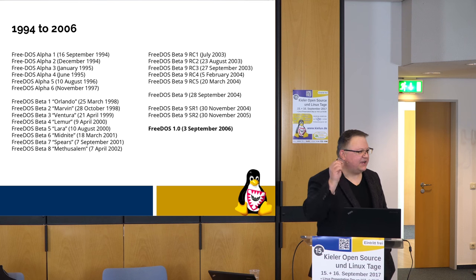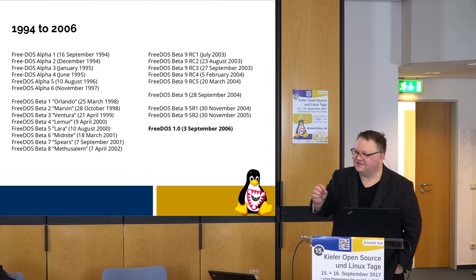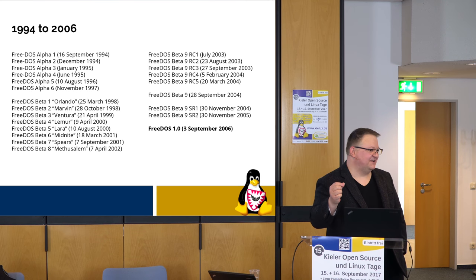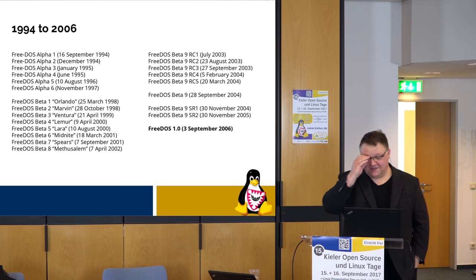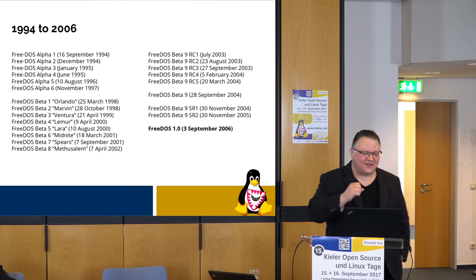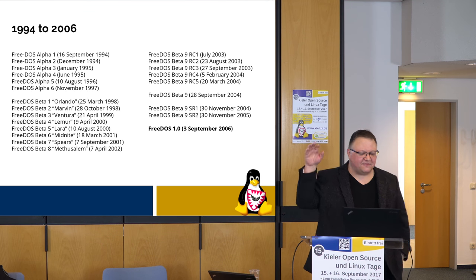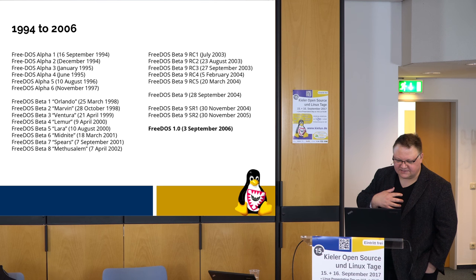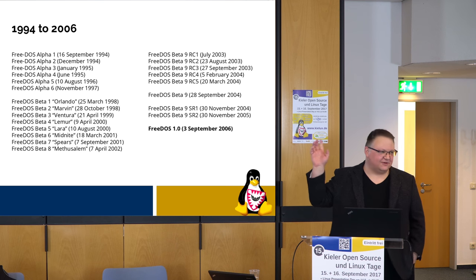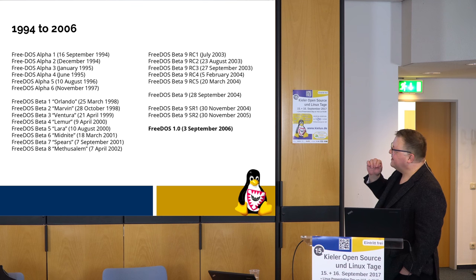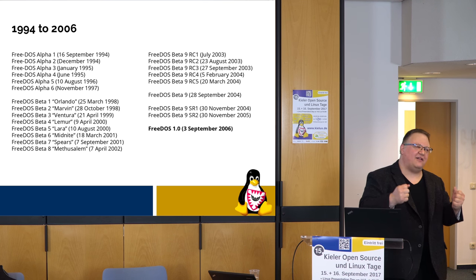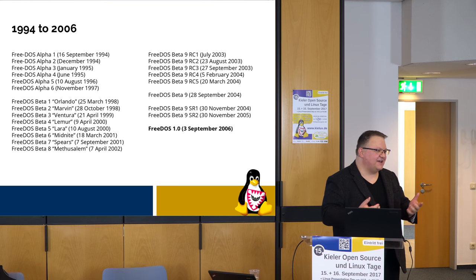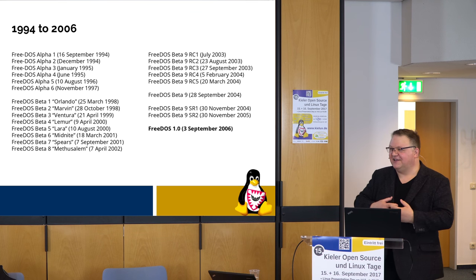When I created that install program, I said I'd just create one really fast so we could have one and fix it later — we'd make a better one for beta 2. That did not happen. We had beta 1 through beta 8 with these cute version names we eventually stopped doing. By 2002 we were still in beta. FreeDOS was created in 1994, and we didn't want to hit 10 years and still not be at 1.0 — that would be really embarrassing.